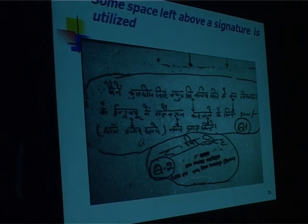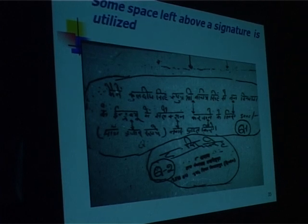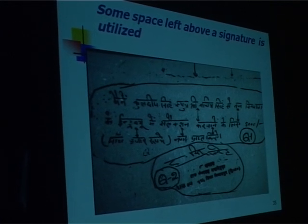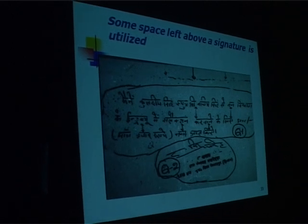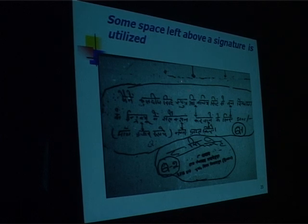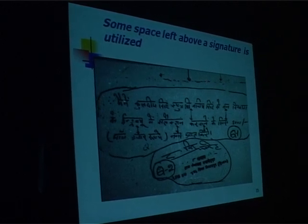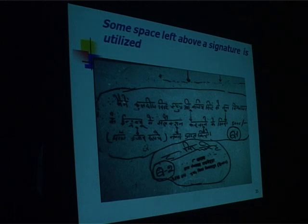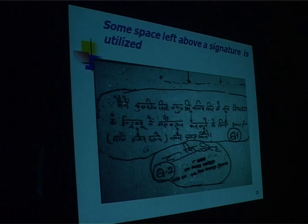Some cases in which the signature is genuine yet the document is forged — what we now call built-up documents. The signature had some space over it which was exploited by the forger. The document was torn from some genuine document and the body writing of the receipt was written over it. So never leave a space blank over your signature.